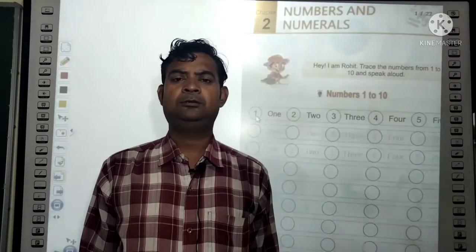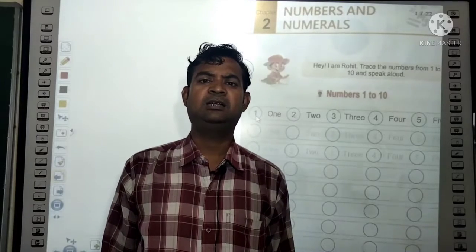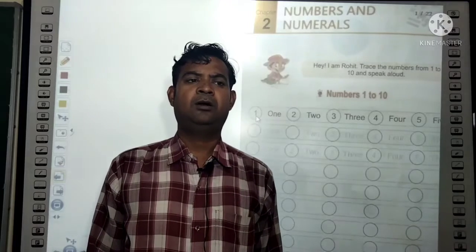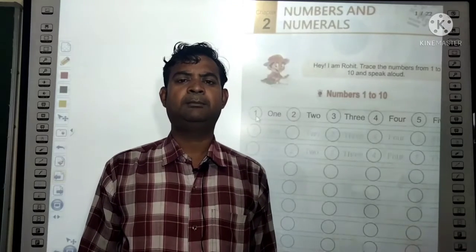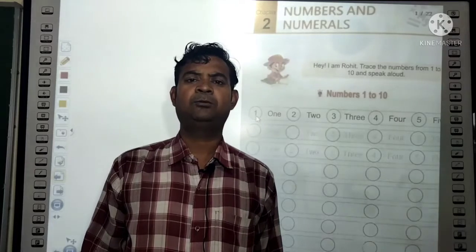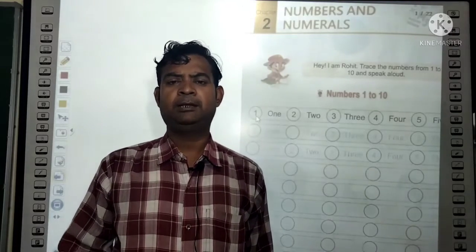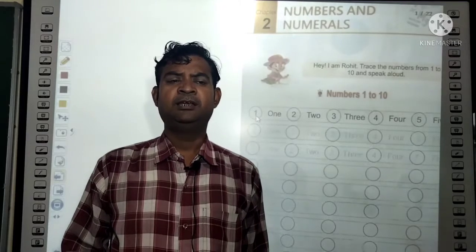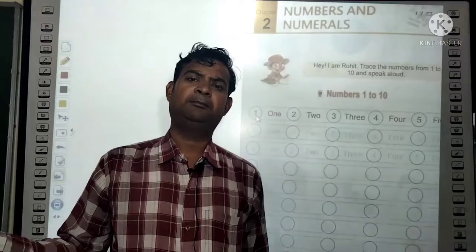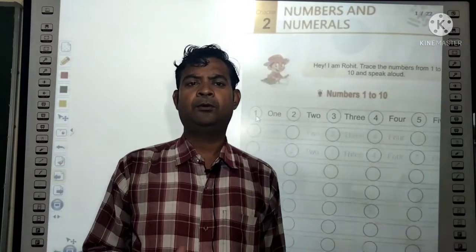Numbers like one, two, three, four, five, six, seven, eight, nine are called numbers. And further: ten, eleven, twelve, thirteen, fourteen, fifteen — these are all numbers.